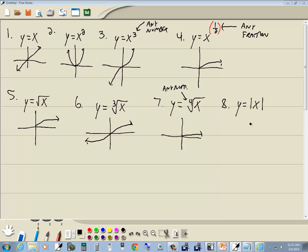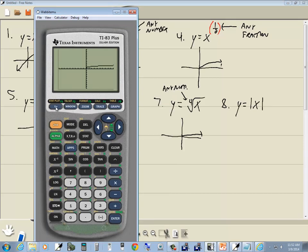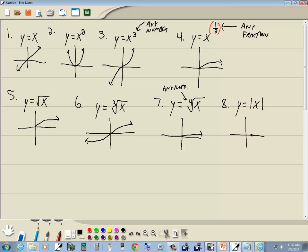Y equals the absolute value of x. I press y equals, press clear, press my math and right arrow to num. And abs is our first one, so I press enter on it. It puts the abs in the beginning parentheses. So I'll put the x key and the closing parentheses on the absolute value, and then press graph. And that gives us our answer.